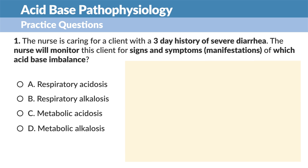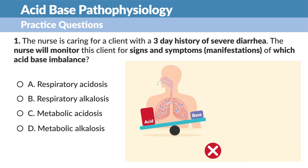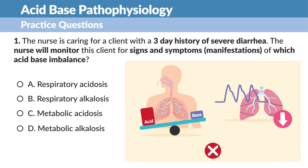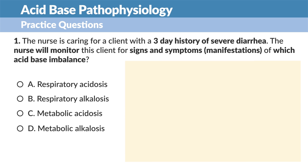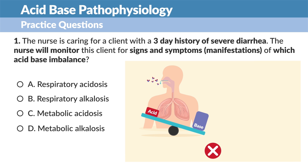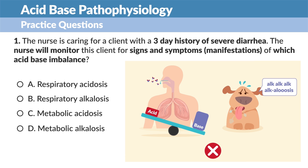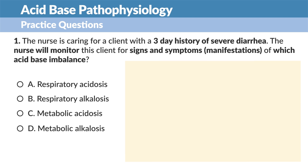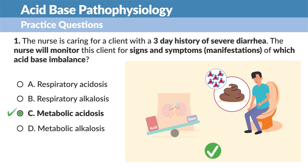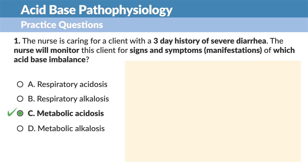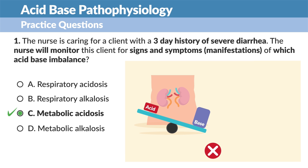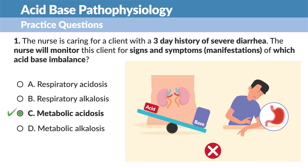Let's take a look at the options. Option A, respiratory acidosis — no, this client is not retaining CO2 with that low and slow breathing in respiratory acidosis. Option B, also incorrect — respiratory alkalosis; the client is not panting like a dog, which is typically from hyperventilation, breathing off all that CO2. Option C, metabolic acidosis — yes, as mentioned, if you poop out your acidosis with diarrhea, you'll be in metabolic acidosis. Option D is incorrect because metabolic alkalosis is typically for vomiting up all that stomach acid — think metabolic alkalosis when you're vomiting.